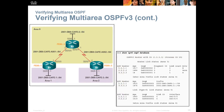If we do a show IPv6 OSPF database, this is what it's going to look like: our advertising router, the age, our links, our bits. If we're dealing with prefixes, they're going to be listed as well, along with interfaces.